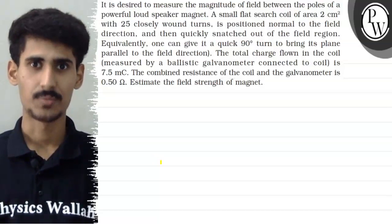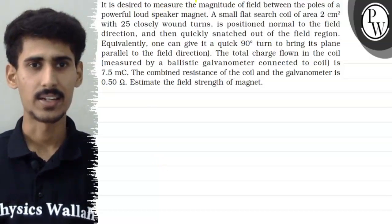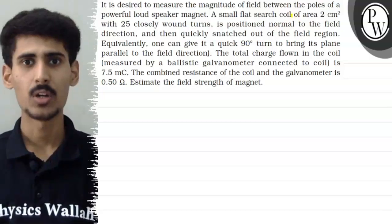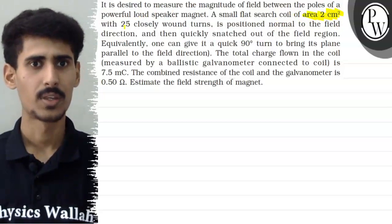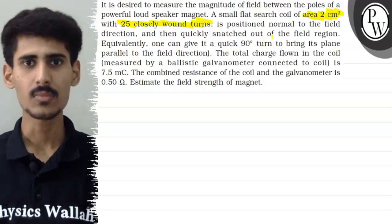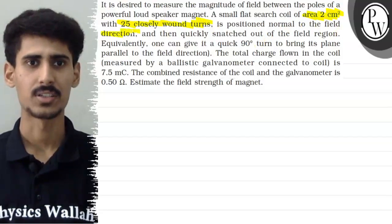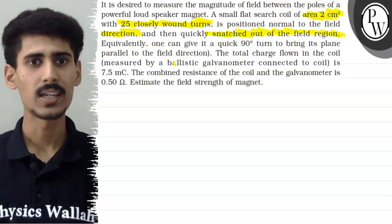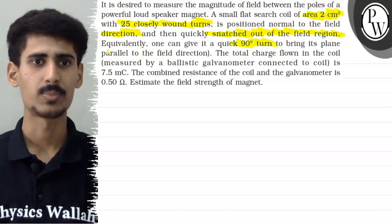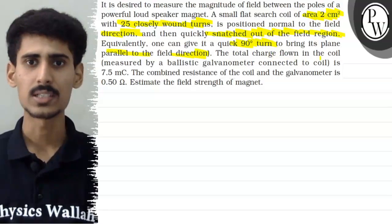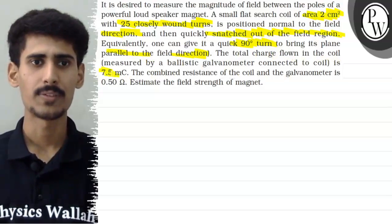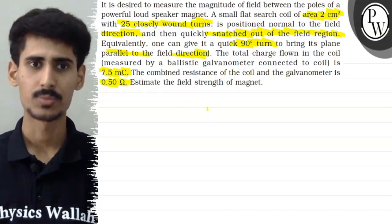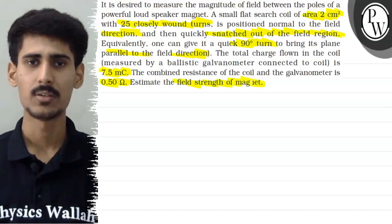Hello! Let's see this question. It is desired to measure the magnitude of field between the poles of a powerful loudspeaker magnet. A small flat search coil of area 2 cm square with 25 closely wound turns is positioned normal to the field direction and then quickly snatched out of the field region. The total charge flown in the coil is 7.5 millicoulombs. The combined resistance of the coil and the galvanometer is 0.50 ohms. We have to estimate the field strength of the magnet.